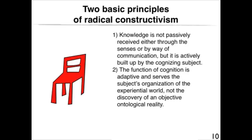The two basic principles of radical constructivism are as follows. The first is that knowledge is not passively received either through the senses or by way of communication, but is actively built up by the cognizant subject. The second basic principle is that the function of cognition is adaptive and serves the subject's organization of the experiential world, not the discovery of an objective ontological reality. For example, a chair is not just a chair that we can feel — it is an object that becomes a concept in the mind of the knower. As we come to recognize various types of objects, we can determine that the concept of chair is larger than just a traditional chair, like the one we see here.